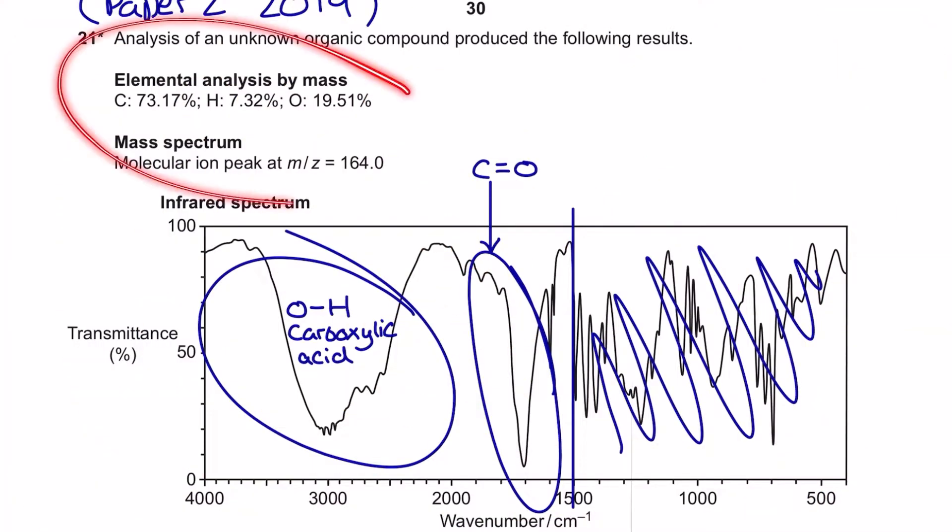I'm going to start by taking you through these two very important pieces of information: the elemental analysis by mass and the mass spectrum. The elemental analysis by mass, very often called the percentage composition by mass, is going to tell me the empirical formula with a little bit of calculation. Looking at the mass spectrum data, we haven't got an actual spectrum to look at but we have got some data here for the molecular ion peak being at a mass to charge ratio of 164. That tells me that the molar mass of my molecule is 164.